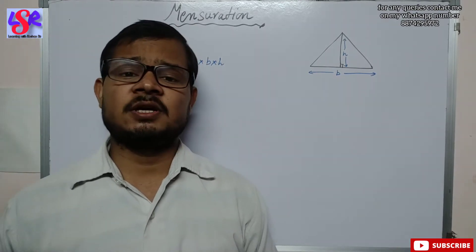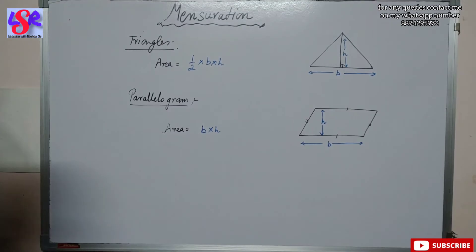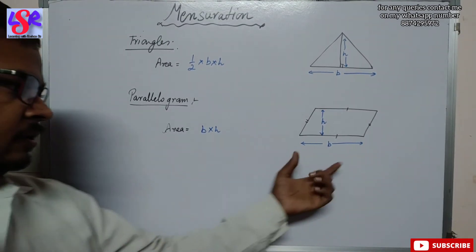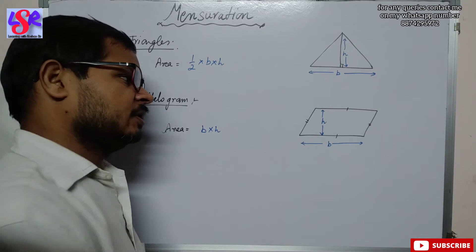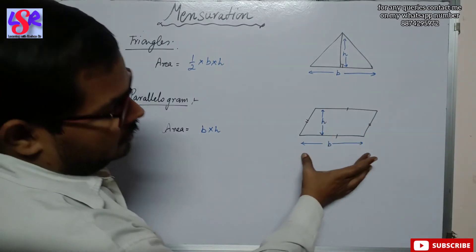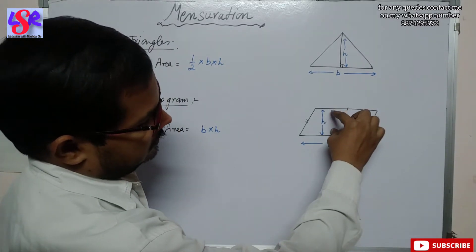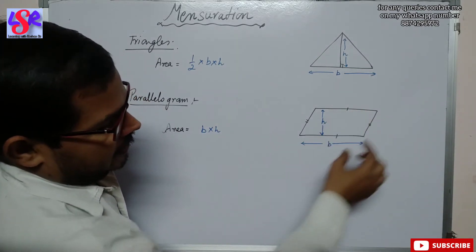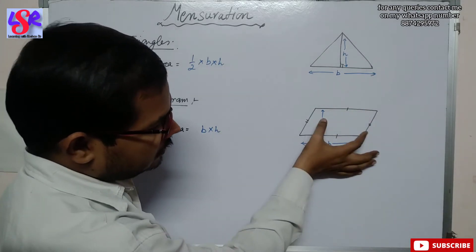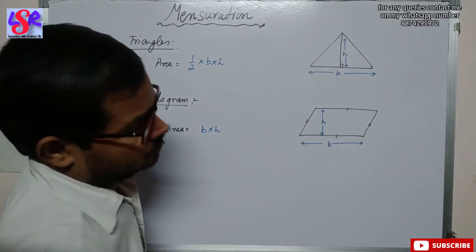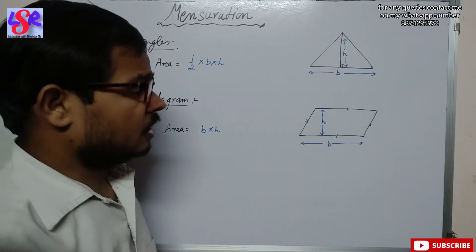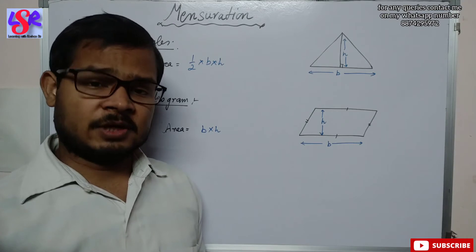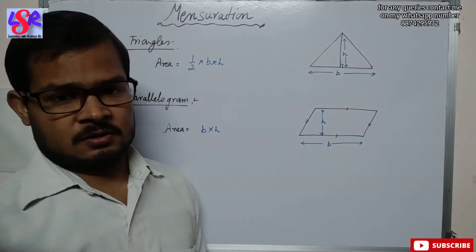The next shape is the parallelogram. The area of a parallelogram is base into height, where the base is one side and the height is the perpendicular distance between the two parallel sides. You can take either pair of parallel sides as the base, and in both cases you will calculate the same value of area.